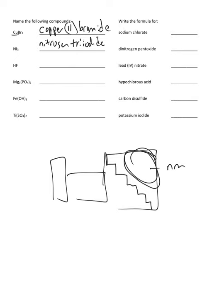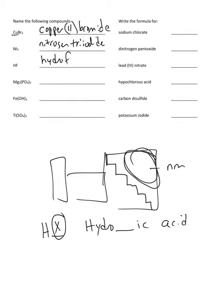HF: if it begins with H, it is an acid. If it contains just one other element, we name it using the formula hydro-blank-ic acid — we put in the root name of the second element. Since we have an acid that does not contain oxygen, we say hydrofluoric acid.